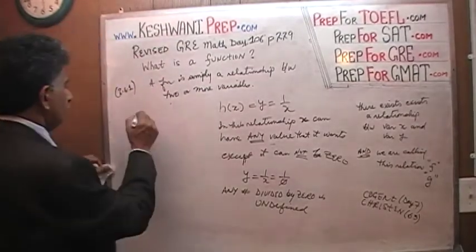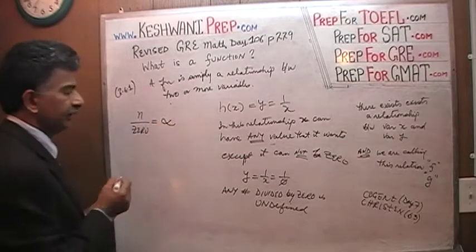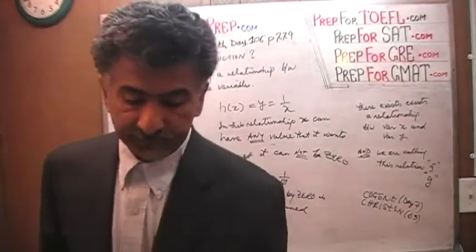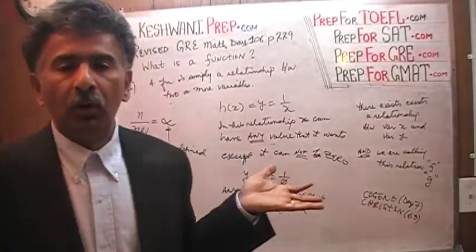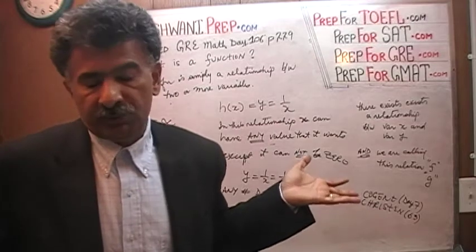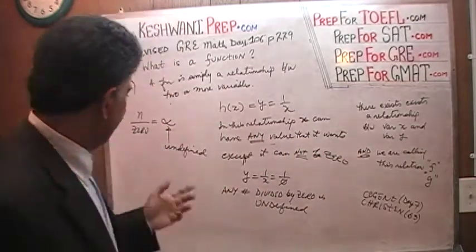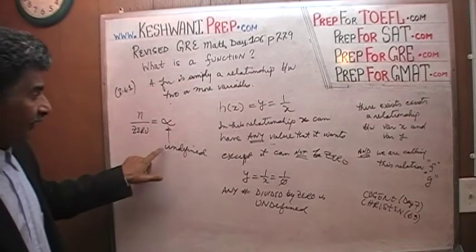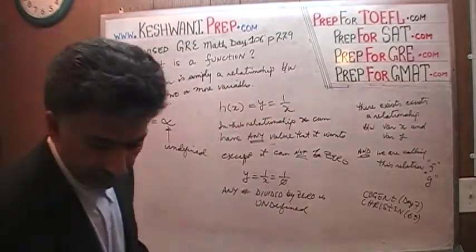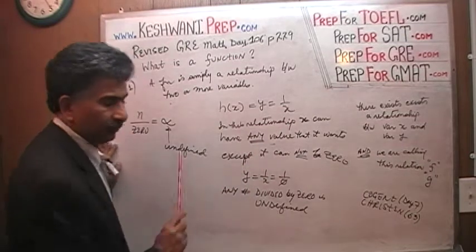Infinity is undefined in the sense that we cannot pinpoint it — there is no such thing as 'one infinity plus another infinity equals two infinity.' Infinity has no specific numerical value we can put our hands on. Because any number divided by zero is undefined, x cannot be zero in h(x) = 1/x.